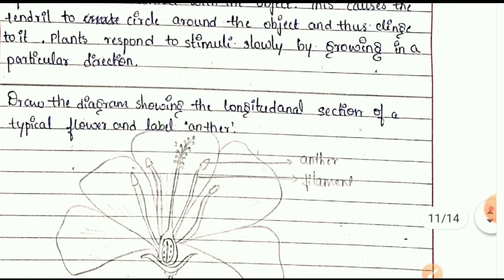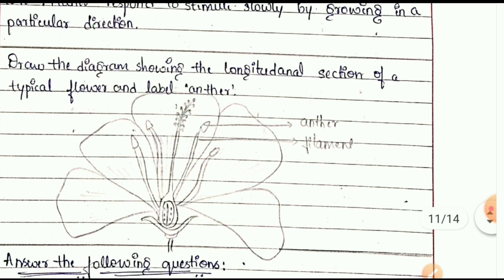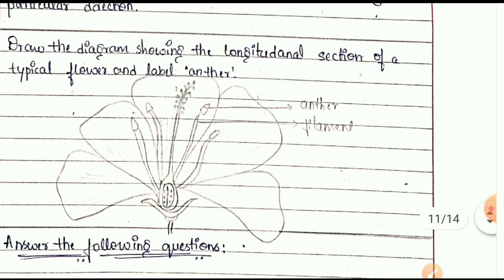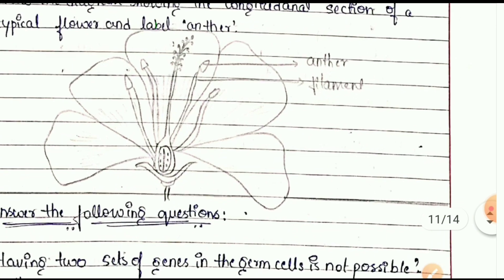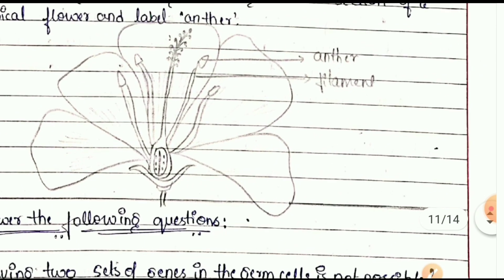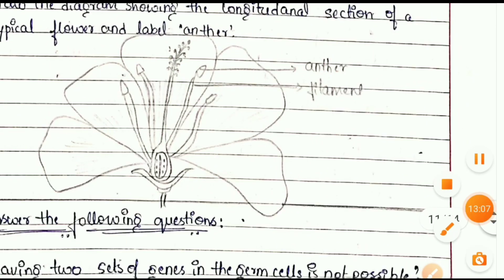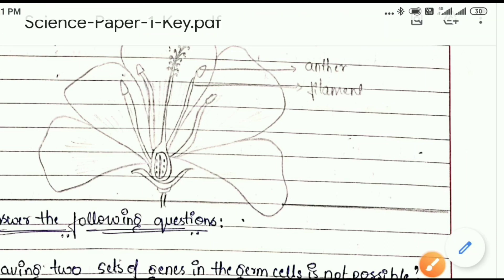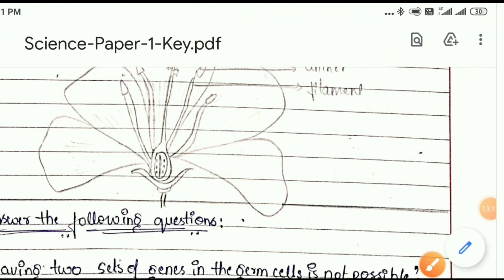Next question: draw the diagram showing the longitudinal section of a typical flower and label the parts. You should label the anther and filament correctly in the diagram.